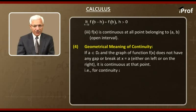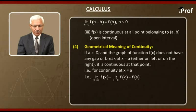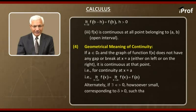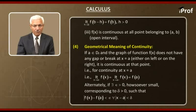That is, for continuity at x equal to a, limit x tends to a minus f(x) is equal to limit x tends to a plus f(x) is equal to f(a). Ultimately, if there exists epsilon greater than 0, howsoever small, corresponding to delta greater than 0 such that modulus of f(x) minus f(a) is less than epsilon for all modulus of x minus a less than delta.